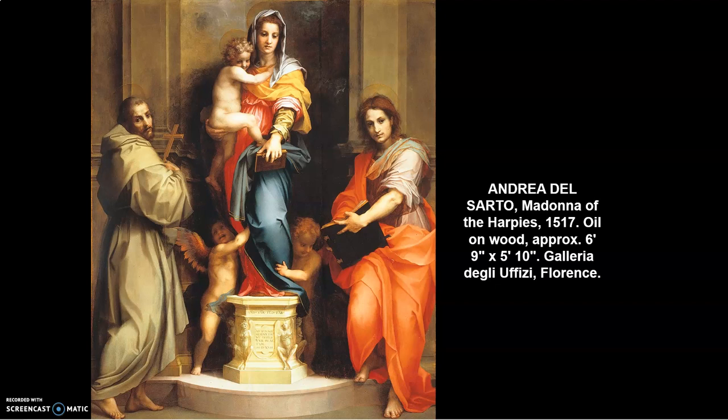This is a good painting for discussing mannerism because it is the product of an artist who is often described as a kind of persistently classical artist — someone who emphasizes values of rationality, symmetry, and harmonious proportions. But in this painting, we can see things begin to diverge in a very different direction, one that has a great deal to do with the influence of Michelangelo in particular.